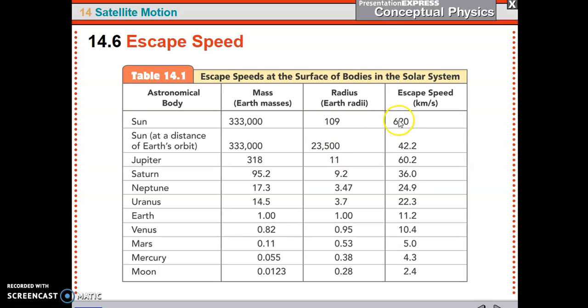And then here's the escape speeds for the surface of all the planets. The sun at the surface is 620. But the sun from out here by us is 42, which is still higher than the Earth. It's four times higher than the Earth's escape speed. So that's a big sun. Jupiter is 60. And the moon is only two and a half kilometers per second to get off its surface. So you can see it's about a fifth of what the Earth's is. And that more importantly than the speed, it's the fuel. You only have to spend about the fifth of the fuel.